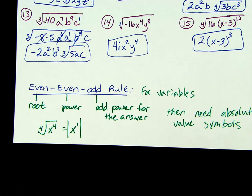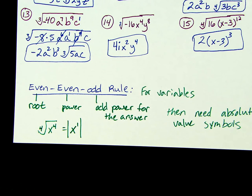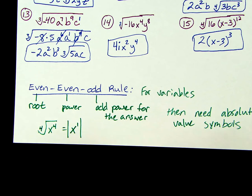The reason for that goes back to the idea of the principal root with even numbers. If I'm taking an even root — a square root, a fourth root, a sixth root, an eighth root, and so on — I have to have a positive answer. But if I'm given the answer and asked to substitute in a number, we can pick whatever number we want to substitute into x. So if I pick a negative number, the absolute values force it to be a positive answer.